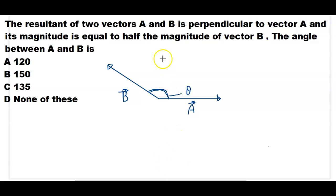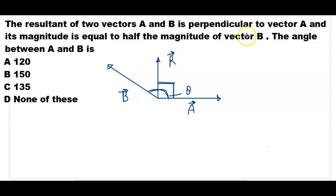The resultant is making an angle of 90 degrees with vector A — here is the angle of 90. Here is the resultant vector R. The magnitude of the resultant is half of the magnitude of vector B. We assume that vector B has magnitude X, so the magnitude of the resultant will be X by 2.